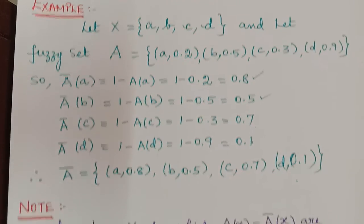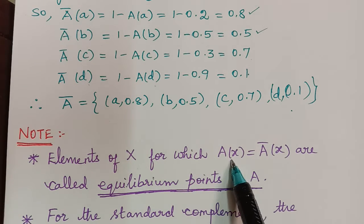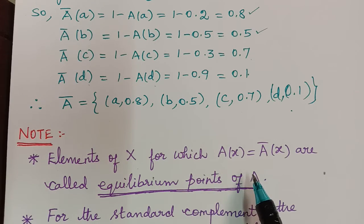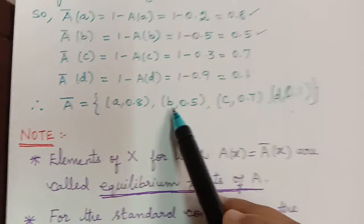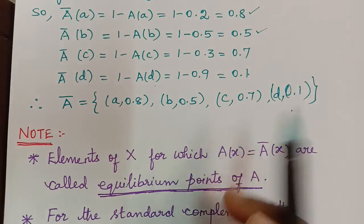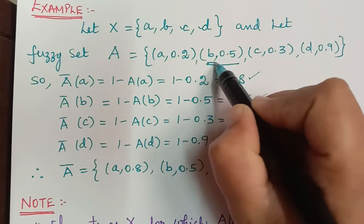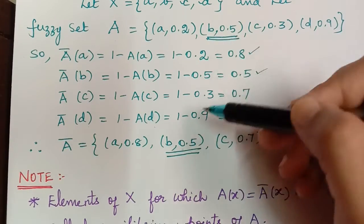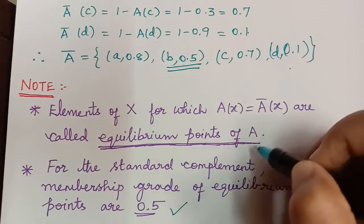Note: Elements of X for which the membership grade in fuzzy set A equals the membership grade in its complement ā are called equilibrium points. In our example, the membership grade of b is 0.5 in both A and ā, so b is an equilibrium point. For the standard complement, the membership grade of equilibrium points is always 0.5.